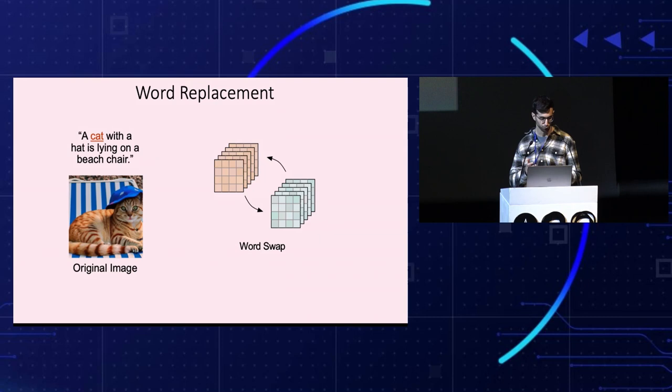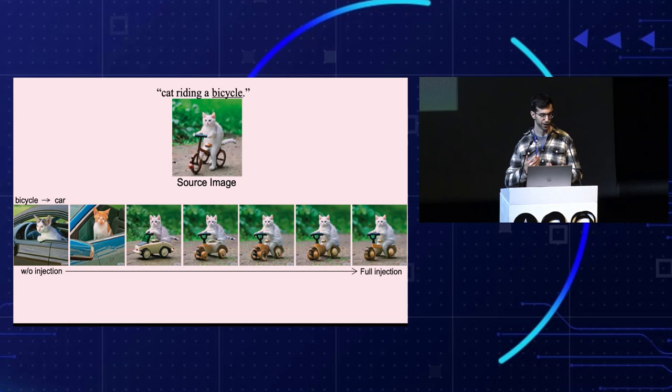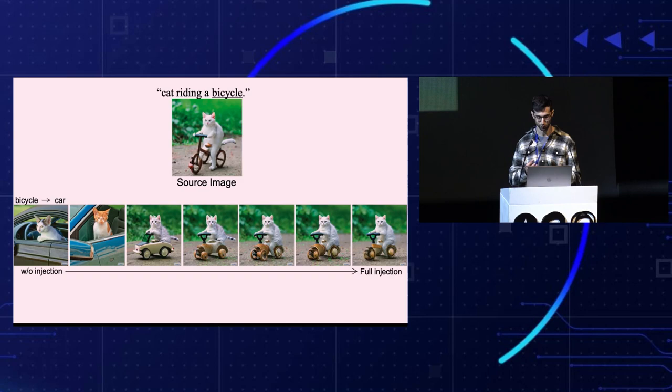To replace this cat with a different animal, we just replace the word cat in the prompt while injecting the attention. And these are the results. By limiting the injection to only part of the diffusion steps, we can intuitively control the fidelity to the original image and to the target text. Here we aim to replace the bicycle with a car. Note how too many injection steps result still in a bicycle, while too few result in a completely different composition.